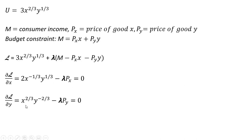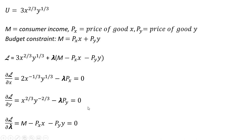The partial derivative of the Lagrangian with respect to good y: we take the exponent on y and bring it down in front — one-third times three is just one. One-third minus one in the exponent leaves us with y raised to the minus two-thirds power. Finally, the lambda term leaves us with minus lambda times the price of good y. We set that partial derivative equal to zero. Taking the partial derivative with respect to lambda gives us back the constraint.